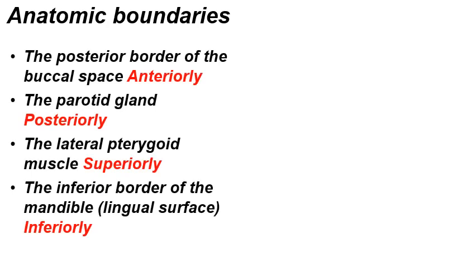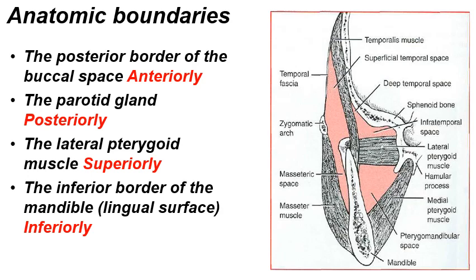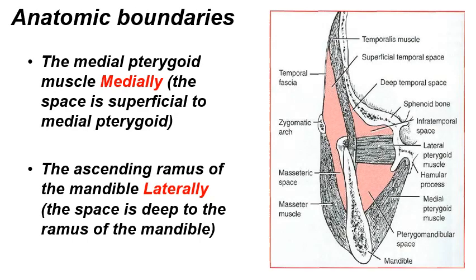The anatomic boundaries of the pterygomandibular space: it is bounded anteriorly by the posterior border of the buccal space, posteriorly by the parotid gland, superiorly by the lateral pterygoid muscle, and inferiorly by the lingual surface of the inferior border of the mandible. In the diagrammatic axial section, the red arrow points to the parotid gland as the posterior boundary, and another arrow points to the anterior boundary where it communicates with the posterior border of the buccal space. Medially it is bounded by the medial pterygoid muscle — the space is superficial to the medial pterygoid — and laterally by the medial aspect of the ascending ramus of the mandible.